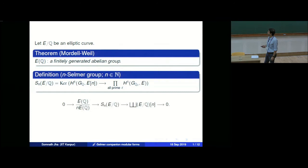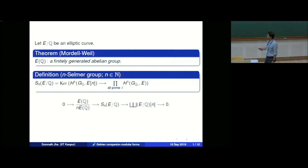The way we prove the weak Mordell-Weil theorem is that E(Q)/n·E(Q) injects into this n-Selmer group, and then the quotient is what is known as the Tate-Shafarevich group — the n-part of that. By the Birch and Swinnerton-Dyer conjecture, this is supposed to be finite, so these two groups are closely related.